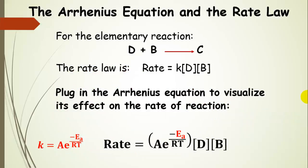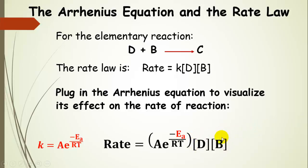What does the Arrhenius equation have to do with the rate law? The rate constant K equals the pre-exponential factor — representing the likelihood that collisions will be productive — times the exponential term. For a general elementary reaction, the rate law is: rate equals the rate constant times concentration of D times concentration of B. Substituting K from the Arrhenius equation shows that the rate depends on orientation, energy, and reactant concentration.